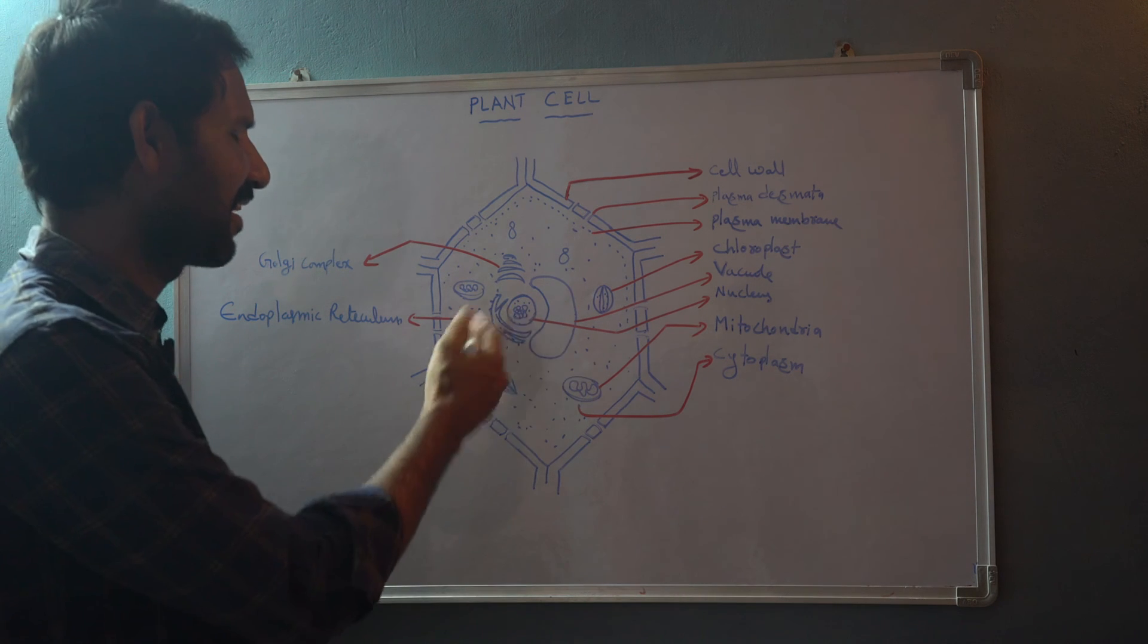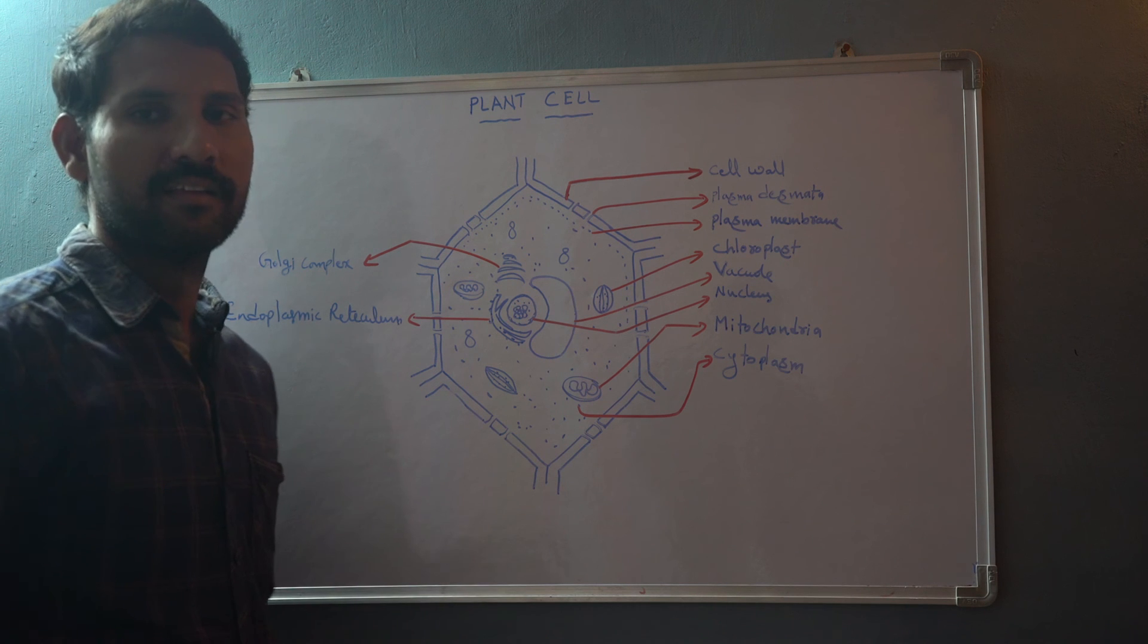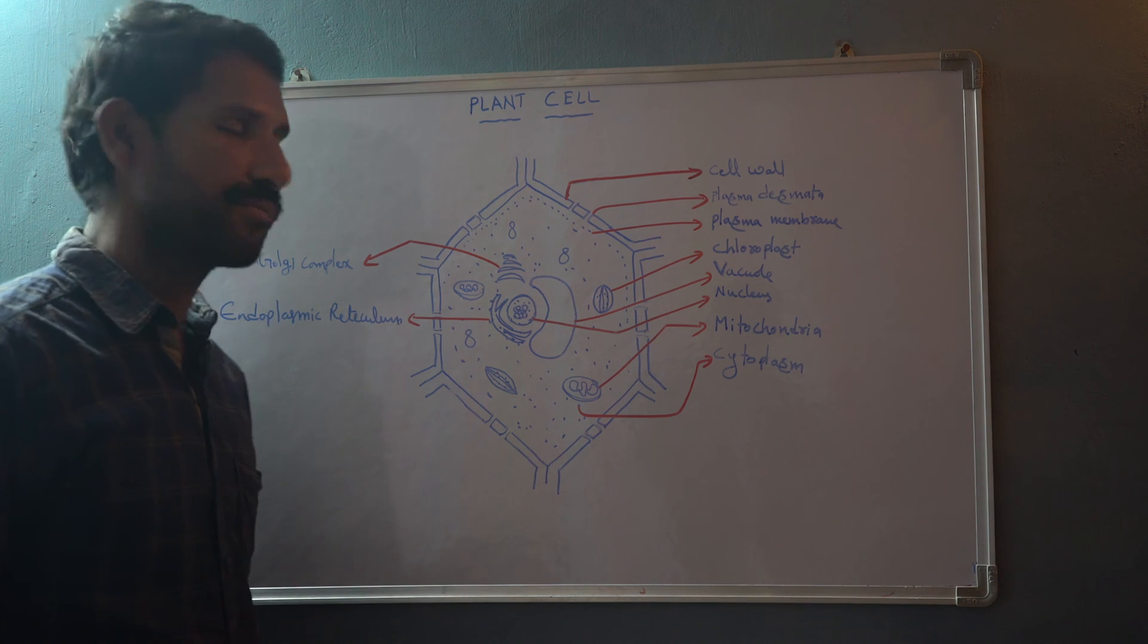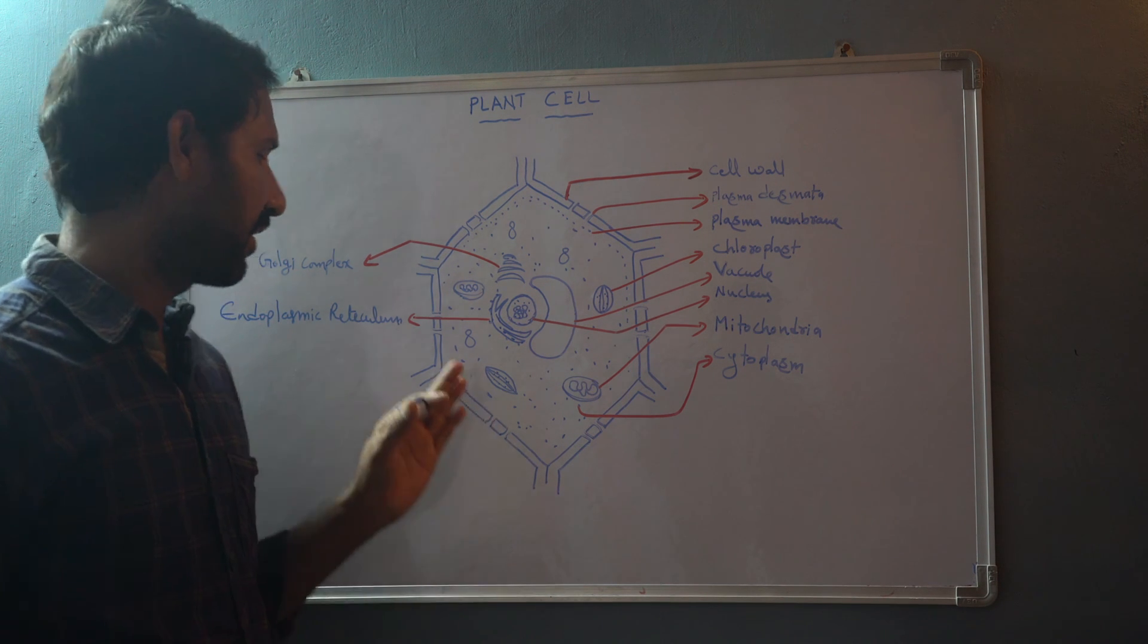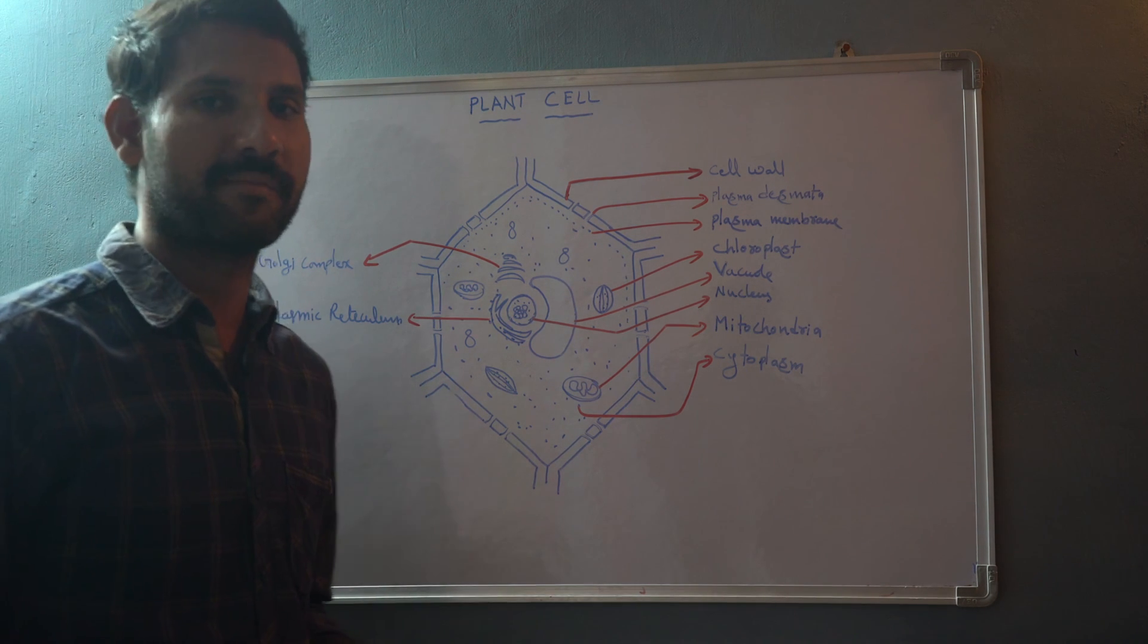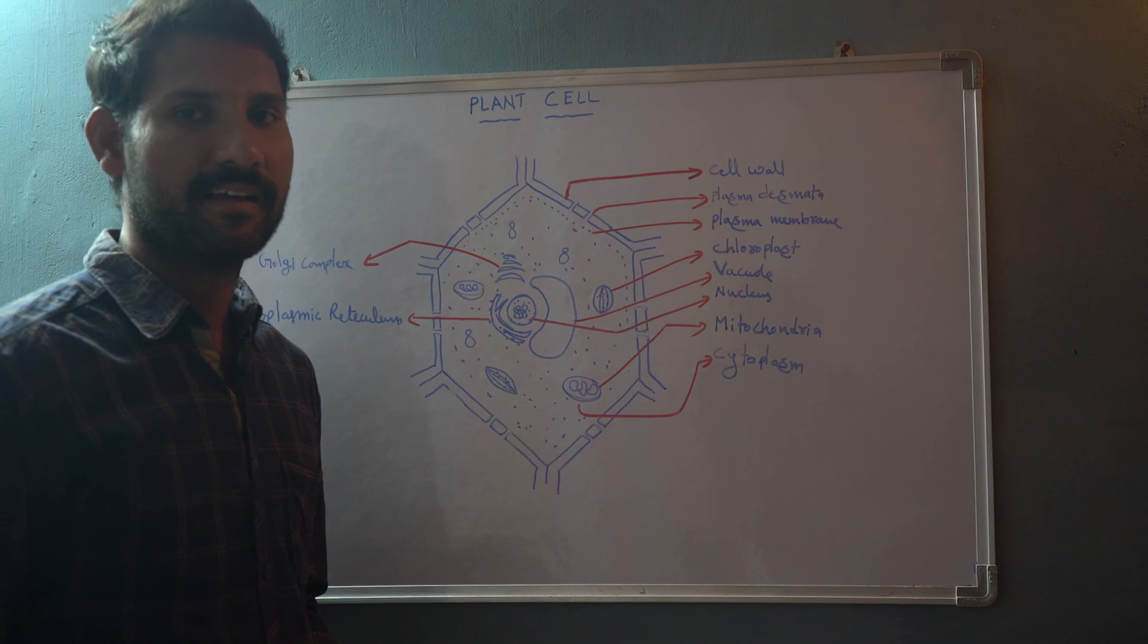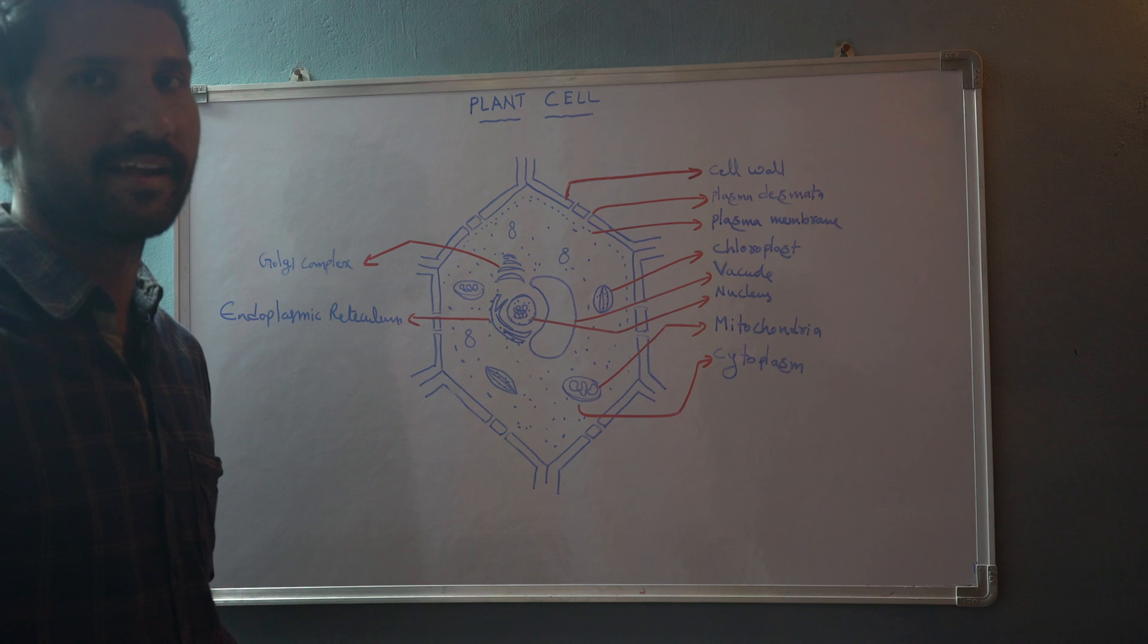Along with that, other cell organelles are also present: Golgi complex, lysosomes, and especially endoplasmic reticulum. Two types of endoplasmic reticulum are present: smooth endoplasmic reticulum and rough endoplasmic reticulum.